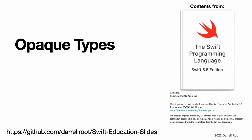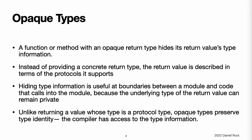Opaque Types. A function or method with an opaque return type hides its return value's type information. Instead of providing a concrete type as the function's return type, the return value is described in terms of the protocols it supports. Hiding type information is useful at boundaries between a module and code that calls into the module, because the underlying type of the return value can remain private. Unlike returning a value whose type is a protocol type, opaque types preserve type identity. The compiler has access to the type information, but clients of the module do not.